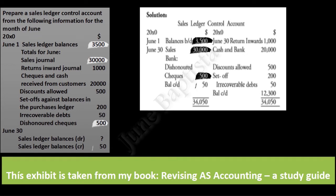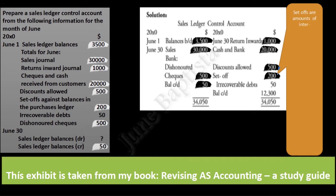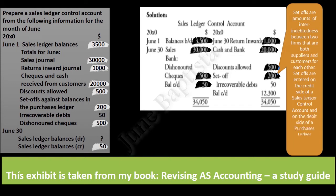Balance carried down $50. On the credit side: return inwards $1,000; cash and bank $20,000, representing the cash and checks received from customers; discounts allowed $500; set off $200. Set offs are amounts of inter-indebtedness between two firms that are both suppliers and customers for each other. Set offs are entered on the credit side of a sales ledger control account and on the debit side of a purchaser's ledger control account. Irrecoverable debts $50.